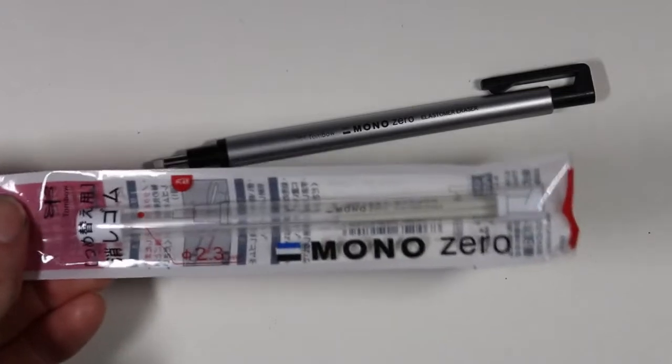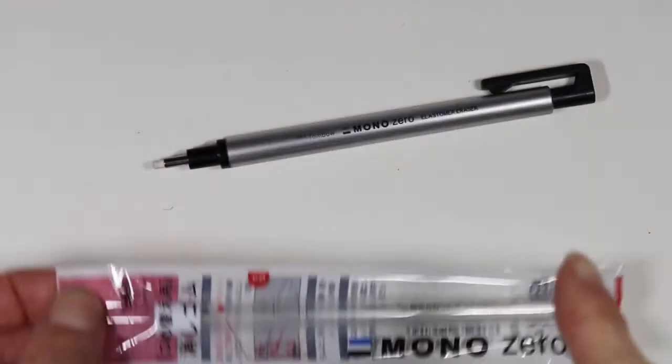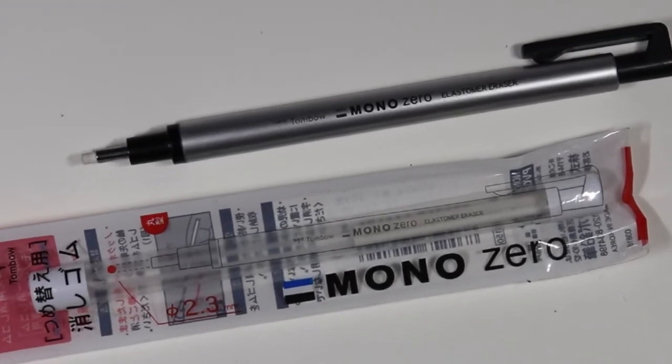I'll show you what the refills look like. It comes in a little tube, kind of looks like a test tube but I'll ignore that. The little erasers are in there and then you just fill it up the same way that you would fill up a mechanical pencil. So this is very convenient.